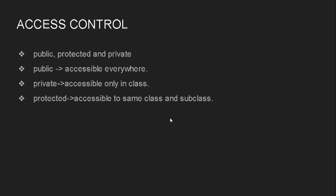I'll be explaining access modifiers in more detail when I use the IDE in upcoming tutorials — that will make it much clearer. Public member functions and variables are accessible everywhere, regardless of whether it's in the same package or a different package, or the same class or a different class. Private is accessible only in the particular class in which it is defined. Protected is accessible in the same class and in subclasses, regardless of the package.